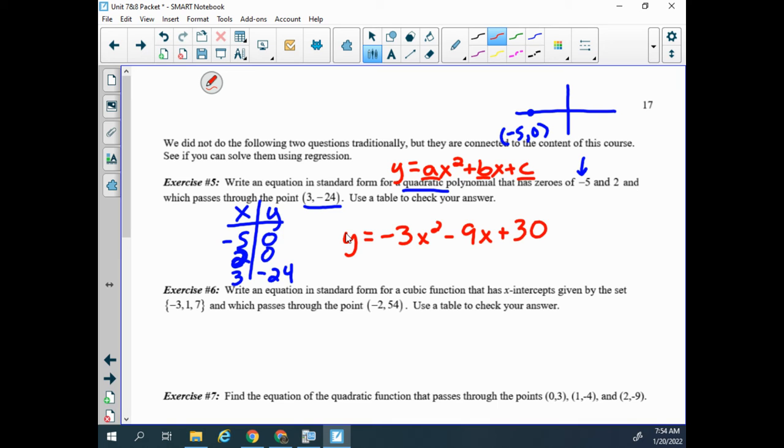The next one is very similar. It says write an equation in standard form for a cubic function that has x-intercepts given by this set, negative 3, 1, and 7, and which passes through (-2, 54). So I'm going to make this table. Remember zeros, those are my x values, and my y value is zero. And then (-2, 54). So go ahead and enter this one.